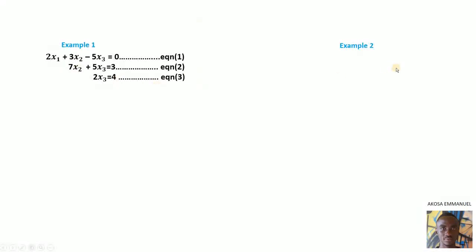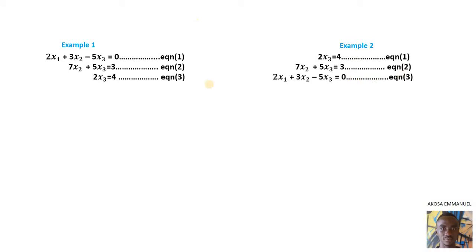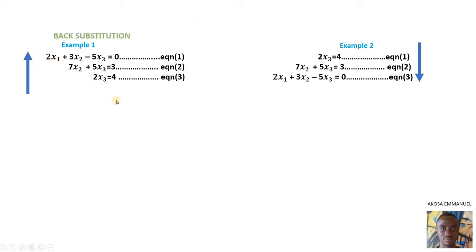If you have a system like this, to solve either example 1 or example 2 is very easy. To solve example 1, we start from equation 3 to equation 1. To solve example 2, we start from equation 1 to equation 3. In example 1, to find S3 in equation 3, we divide both sides by 2 to get S3. Whatever value we get for S3, we put that into equation 2 to find S2. When we get S2, we put S2 and S3 into equation 1 to find S1. So we do what is called back substitution — we start from 3, move to 2, then to 1.